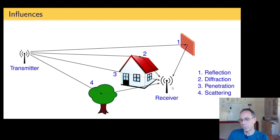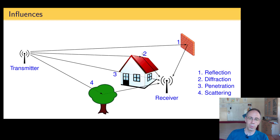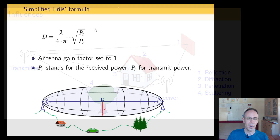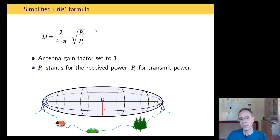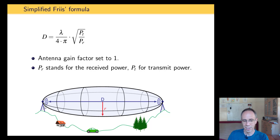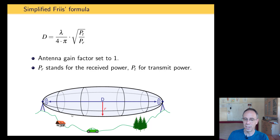All these influences together affect the range. The best way to get the most range is of course when you have line of sight and build what is called a Fresnel zone. Here's an example: two modules on a hill, where you can see the Fresnel zone being built without any interruption or influence on the original signal.